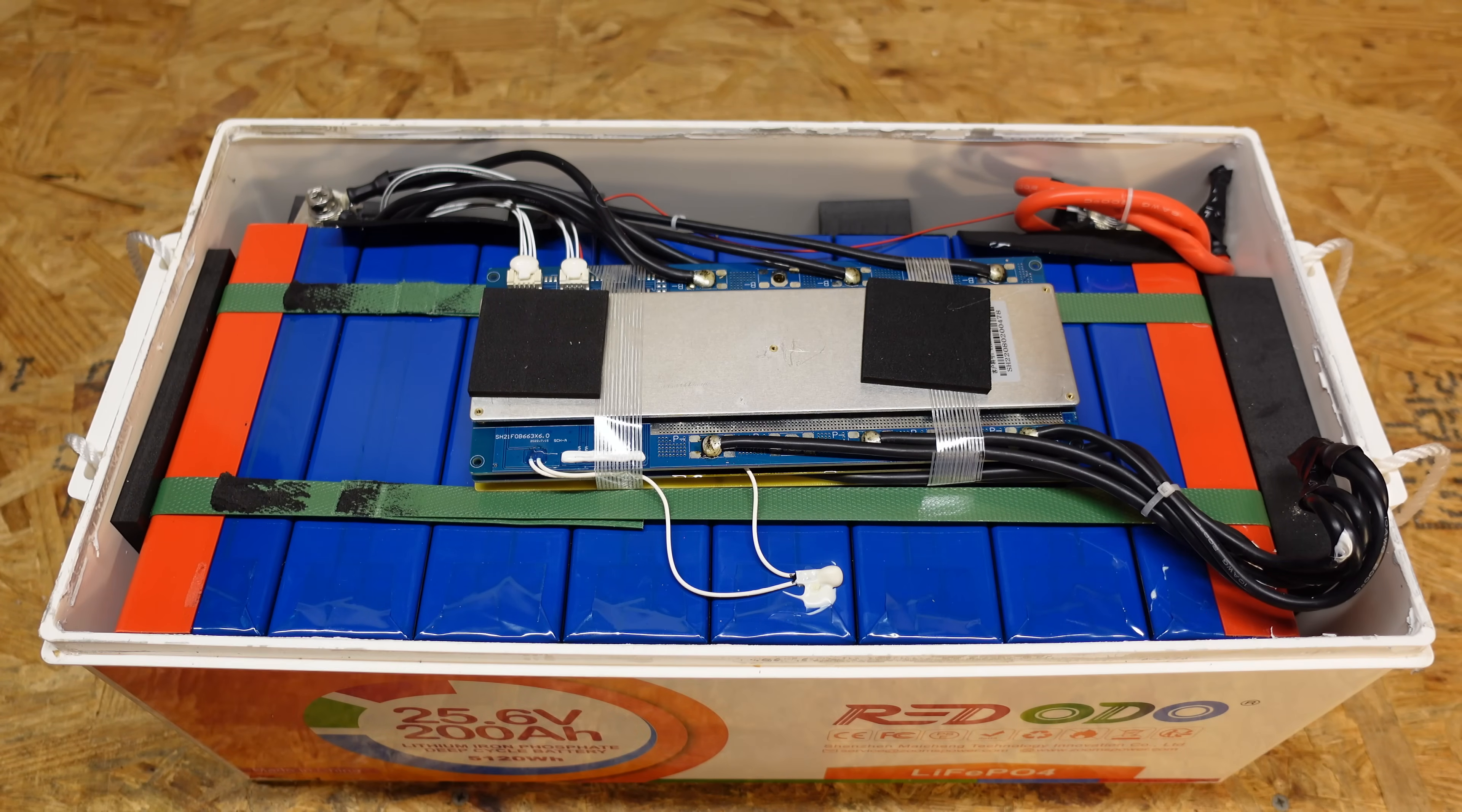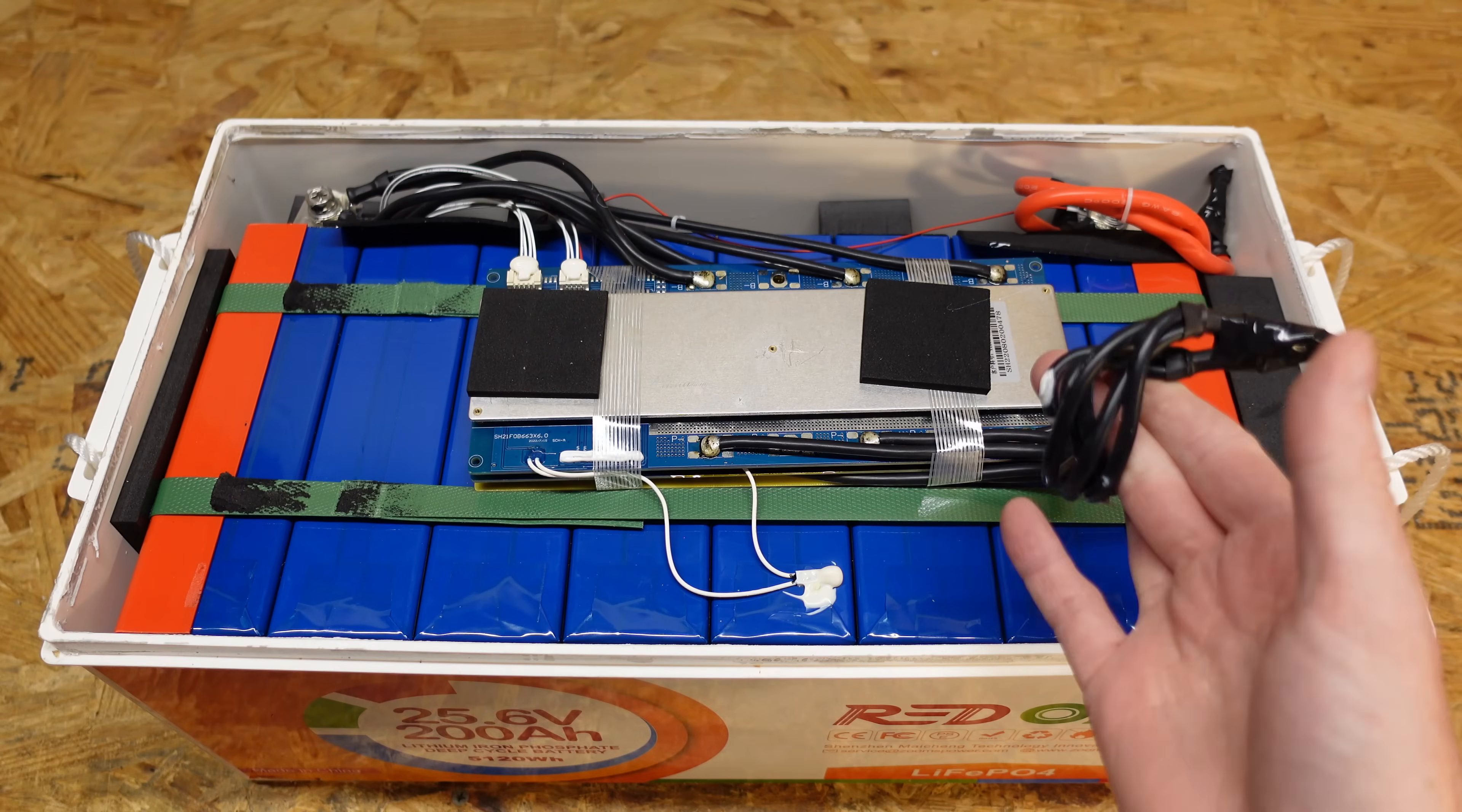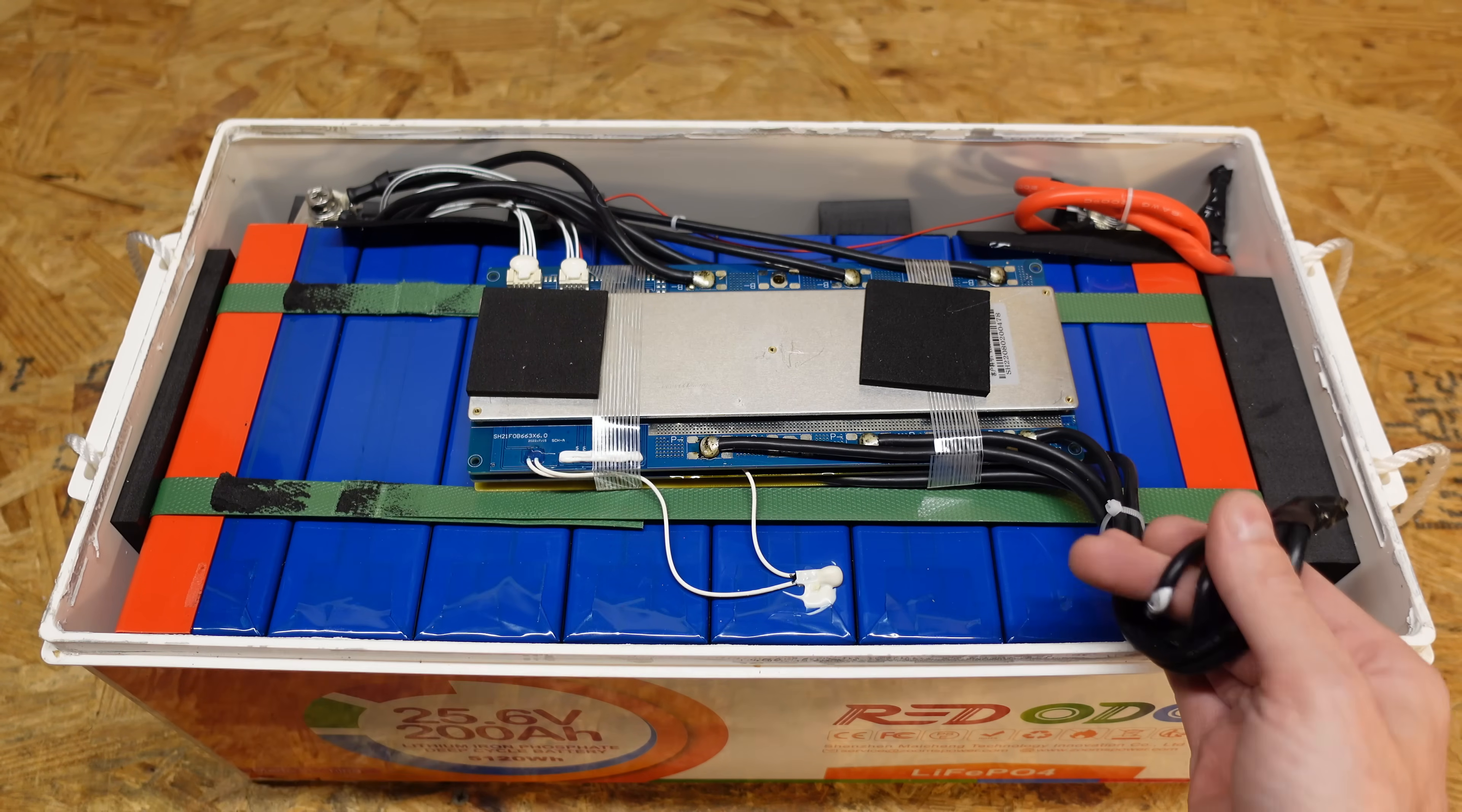All right, so taking a look inside, this is a very simple layout. We've got our eight cells, our BMS, and then we've got our conductors that go to the positive and negative post. And what we have here is six number 10 wires going to two separate lugs. And there's three on the top and three on the bottom of this BMS.